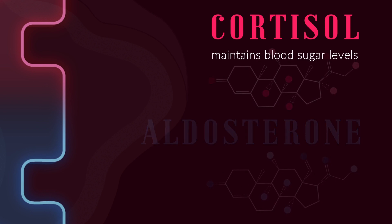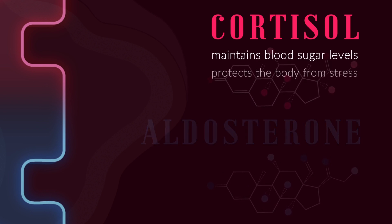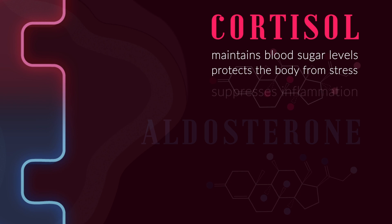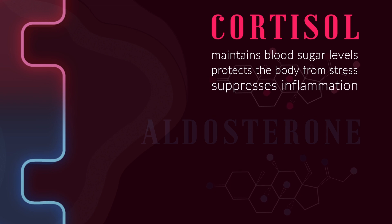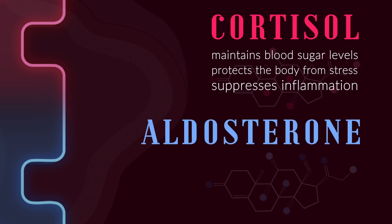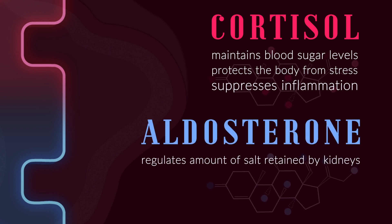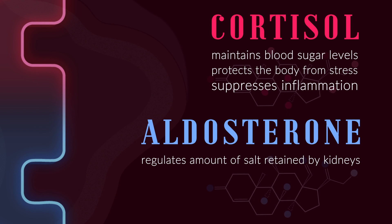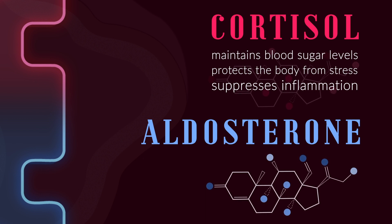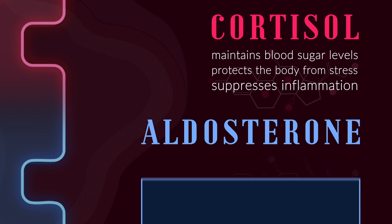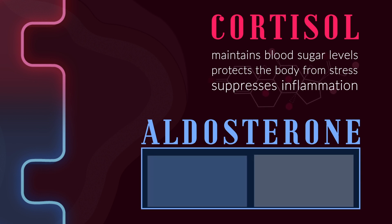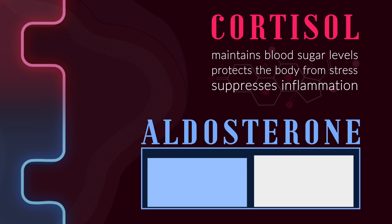Cortisol maintains blood sugar levels, protects the body from stress, and suppresses inflammation, while aldosterone regulates the amount of salt retained by the kidneys. Without enough aldosterone, the body starts to lose too much water and salt.